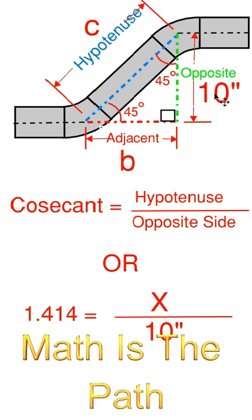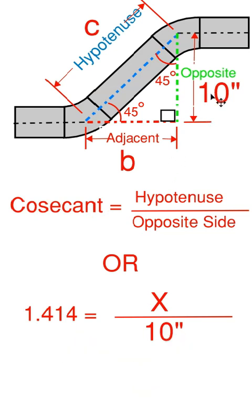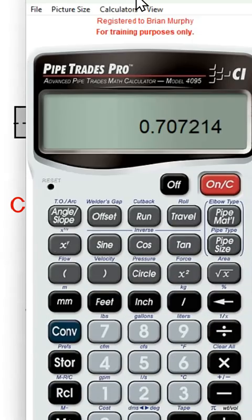If we use 10 inches as our opposite and we get the cosecant number, then we can multiply our cosecant number times 10 to get the hypotenuse.